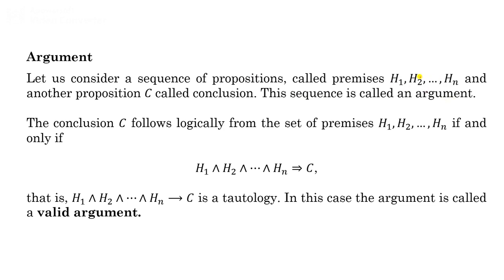Here these are premises and the conclusion C is based on all these premises. The conclusion C follows logically from the set of premises H1, H2 up to Hn if and only if the conjunction of all these premises tautologically implies conclusion C, or in other words H1 ∧ H2 ∧ ... ∧ Hn → C is a tautology. In this case we say the argument is a valid argument; otherwise it is not a valid argument.